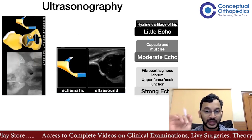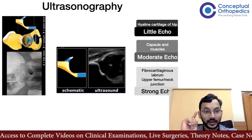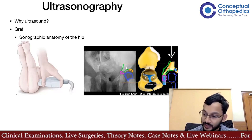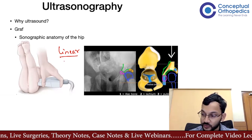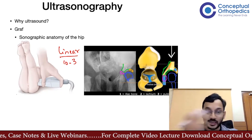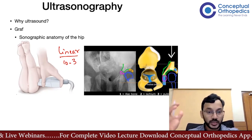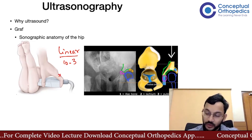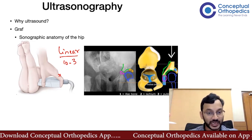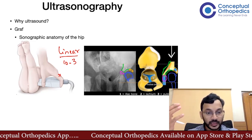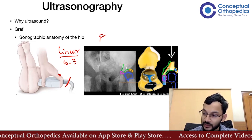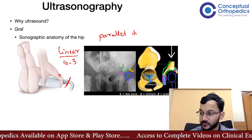To understand the anatomy, we are looking at it sideways. The transducer used is a high-frequency linear transducer — a 10-3 transducer. Just tell your ultrasound technician to keep a linear 10-3 transducer ready. Every probe has an X marker, and that marker must face the head of the child. The probe should be parallel to the ground with the child in the supine position.